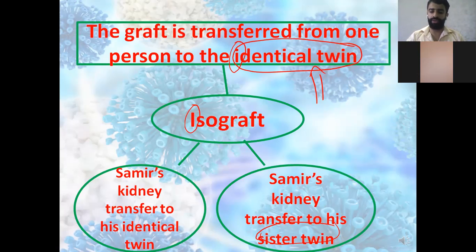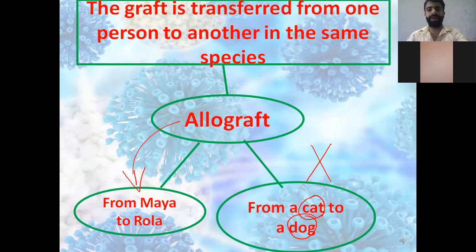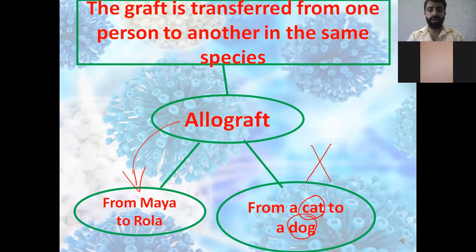The third type is called the allograft. The graft is transferred from one person to another of the same species. For example, from Maya to Rilla, from Ismail to Kareem, from Abbas to Adam — all of them belong to the same species, which is human.